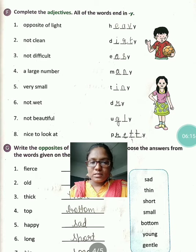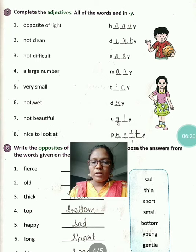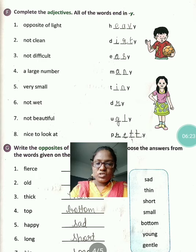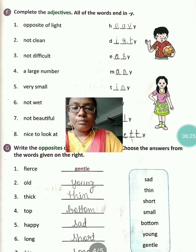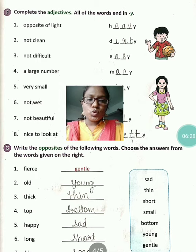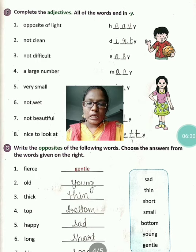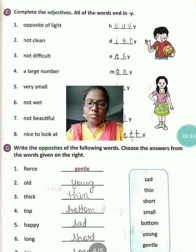Complete this exercise also. Complete exercise D, E, F. Now we'll go to the last thing — G exercise. Write the opposite of the following words. Choose the answers from the words given on the right. Aapke right side mein options diye hue hain.